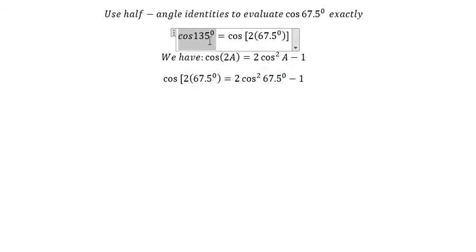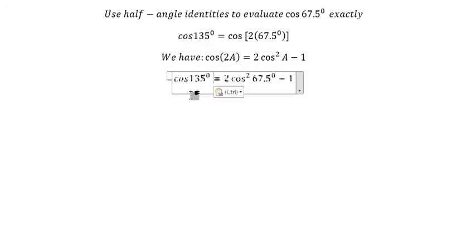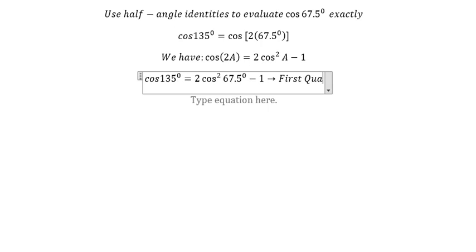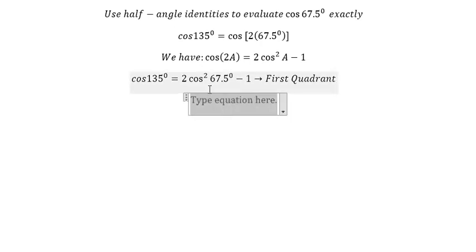We will replace cos(135°) in the formula. Now we can find the value of cos(67.5°). Since 67.5° is in the first quadrant, we should have a positive number.